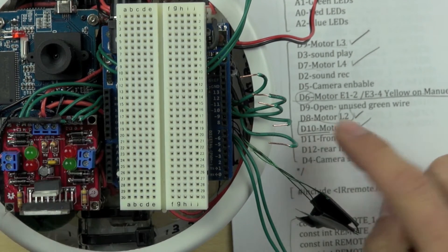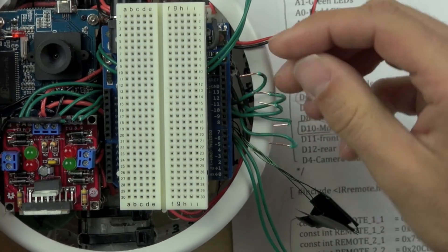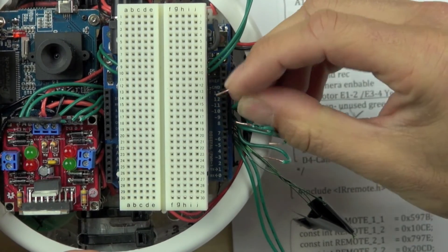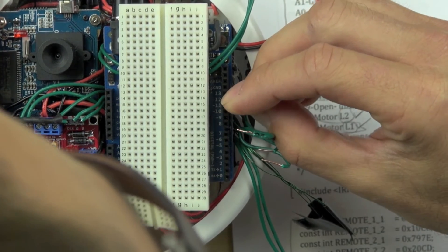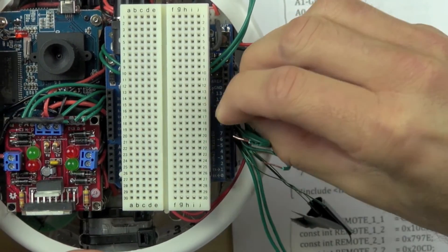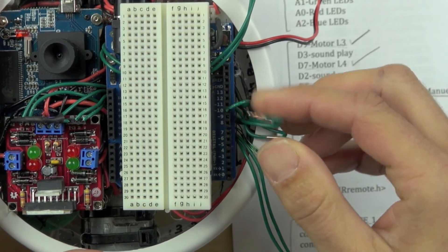When we create our code on our computer, we'll use this list to tell us which pinout is which in the code, and that'll help us make sure that we get all of our functionality lined up correctly.